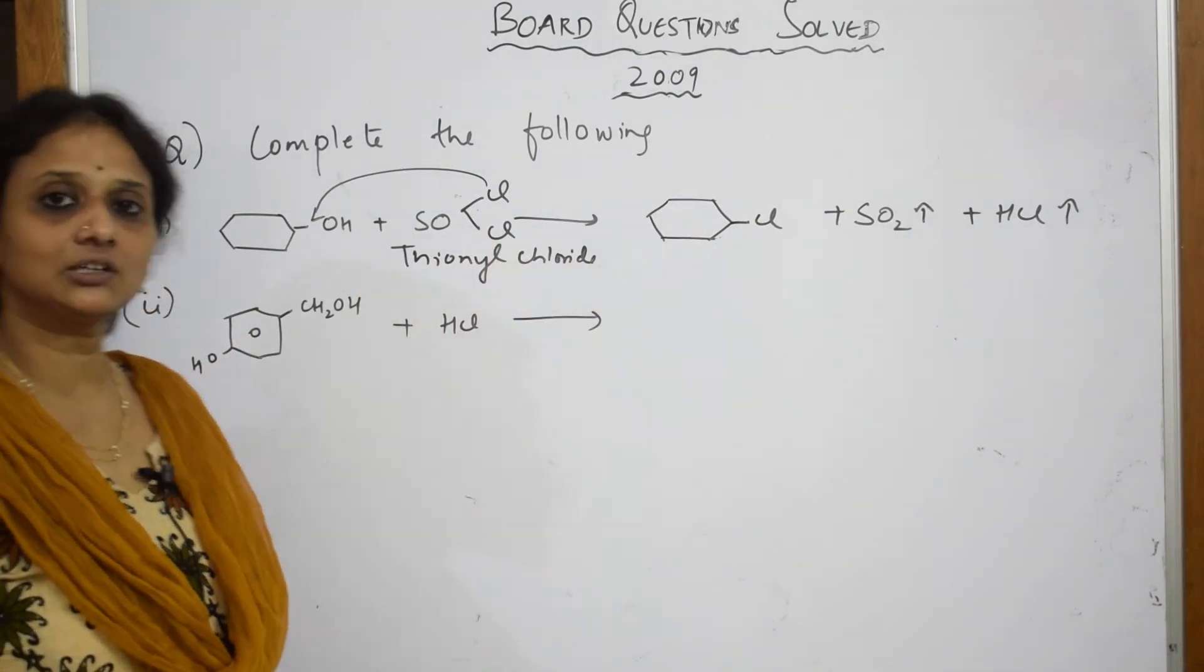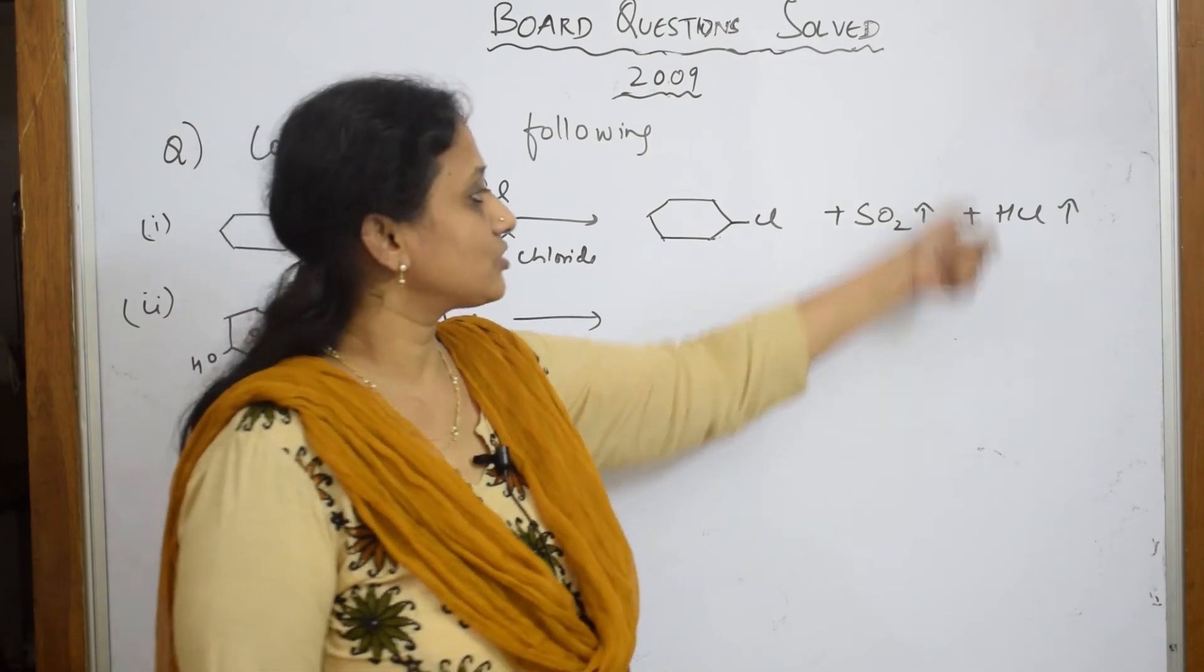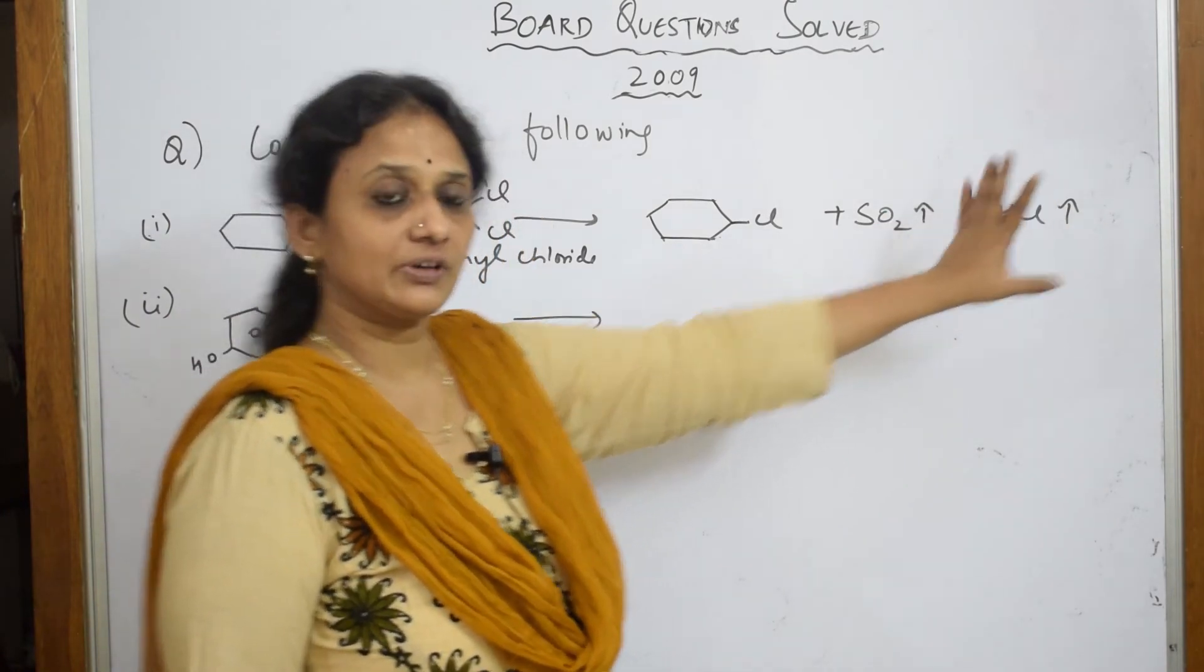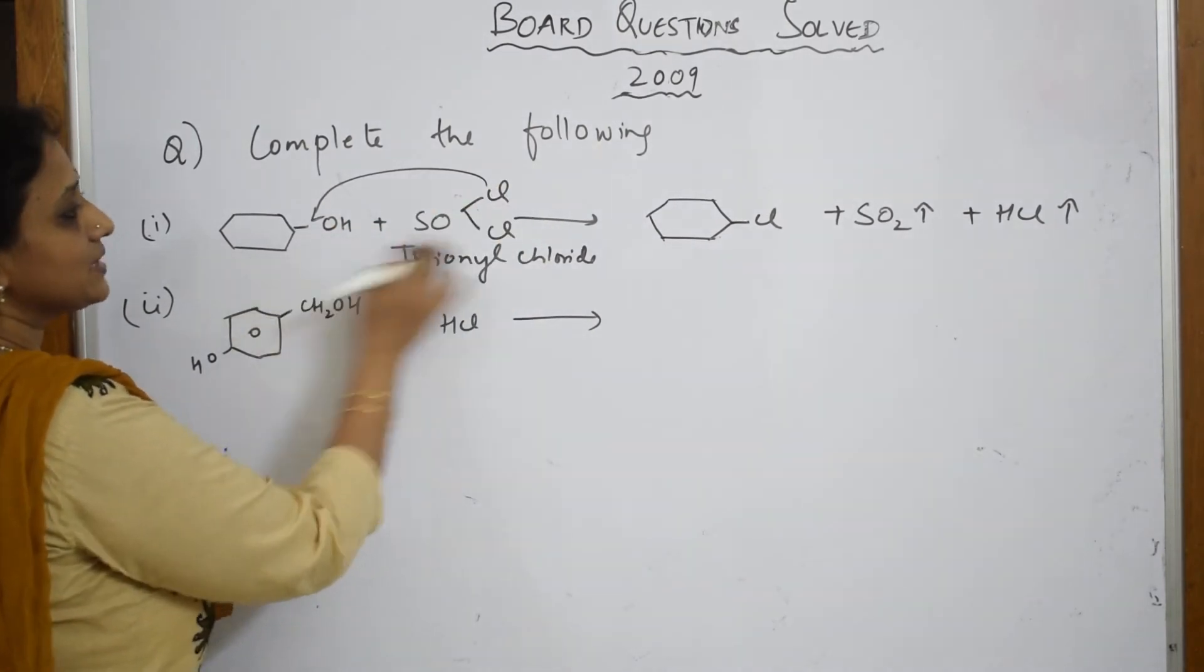So simple. As soon as you see thionyl chloride, write do these two, both in vapor state. Sulfur dioxide also vapor, HCl also vapor. So once you take out the leftover nucleophile, Cl is going to replace this and you get this.